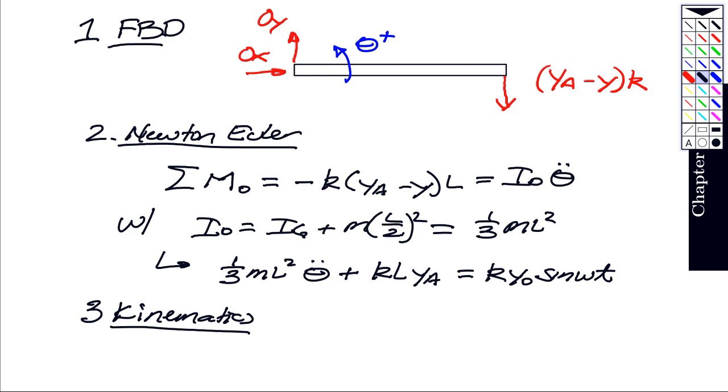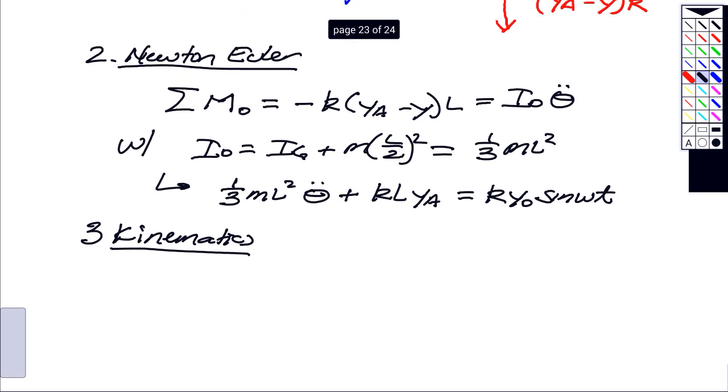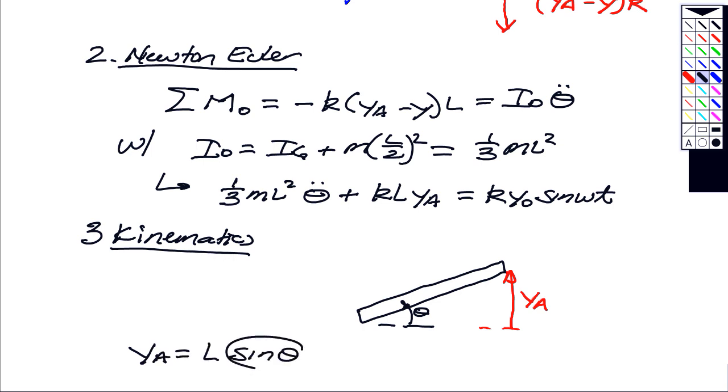If I look at the bar in a state where theta is plus, it means that the bar will have been rotated through some angle in the counterclockwise sense. yA is the deflection here of end A. So from trig, we have that yA is equal to L times sine of theta. For small angles, theta and sine are the same, so this is roughly L theta.